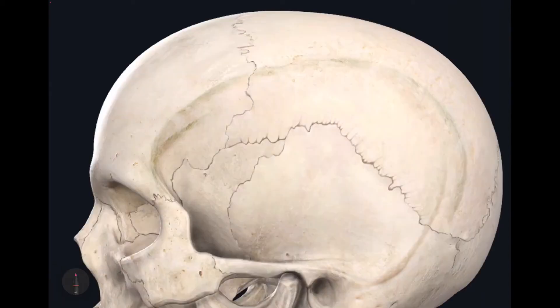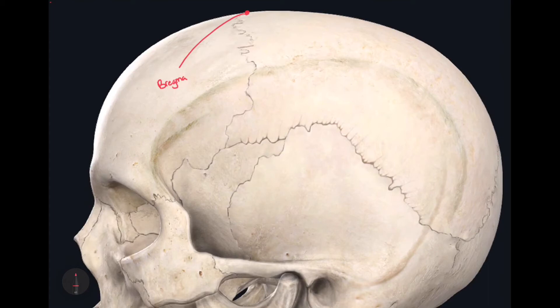Now we're going to change images to identify more craniometric points on the mid-sagittal plane. In this lateral view of the skull, the next craniometric point is located at the intersection between the coronal suture and the sagittal suture — this craniometric point is called the bregma. Just a few centimeters posterior to the bregma, along the mid-sagittal plane, is the highest point of the skull. This is called the vertex.